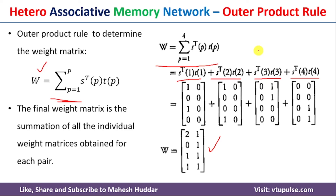In this video, I have discussed how to use the outer product rule to find the optimal weights in a hetero associative memory network. I hope the concept is clear. If you like the video, do like and share with your friends, press the subscribe button for more videos, and press the bell icon for regular updates. Thank you for watching.